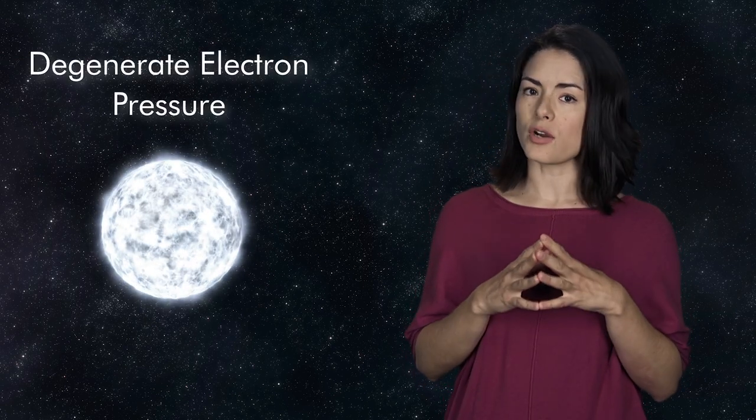For white dwarfs, the pressure from gravity has stripped all the electrons from the atoms. Gravity then packs the electrons so closely together that the Pauli exclusion principle kicks in and stops the white dwarf from shrinking any further. This is called the degenerate electron pressure.